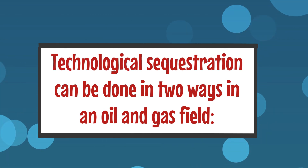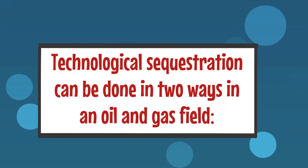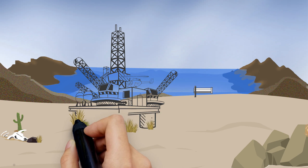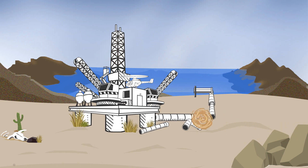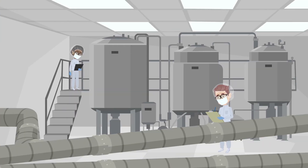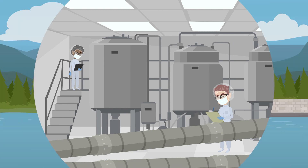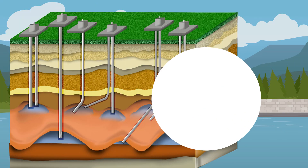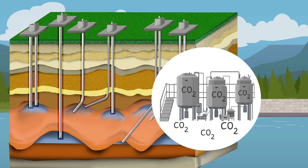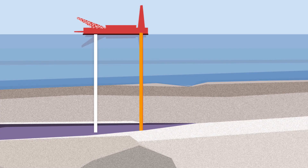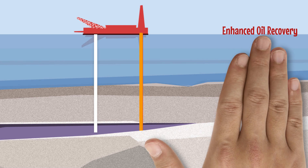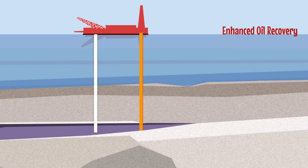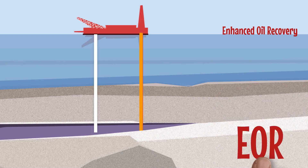Technological sequestration can be done in two ways in an oil and gas field. Firstly, abandoned natural gas fields could be used to store CO2 captured from industrial processes — the reservoir will already have storage and seal in place to accommodate the gas.